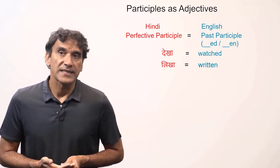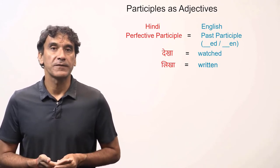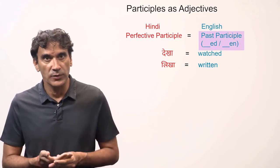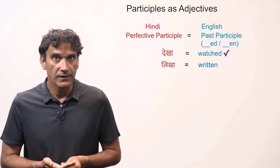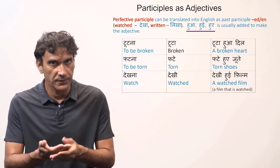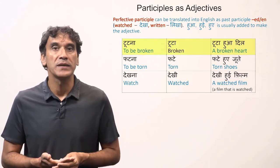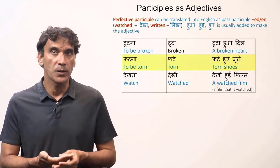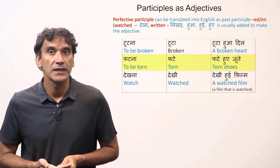The previous participle as adjective was the habitual form, used for continuous or ongoing action. Now we will look at the perfective participle, which expresses a completed action and can be translated as a past participle in English — for example, words ending in '-ed' or '-en' like 'washed' or 'written'. The forms 'hua', 'hui', and 'hue' are usually added to the perfective participle to make it an adjective. For example, 'tutna' means 'to be broken', 'tuta' means 'broken', and 'tuta hua dil' means 'a broken heart'. 'Phatna' means 'to be torn', 'phate' is the masculine plural form, and 'phate hue jute' means 'torn shoes'.